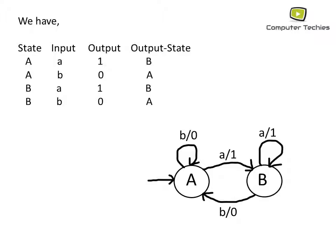Looking at this Mealy machine: we have two states A and B. If input a is applied we move to state B with output 1. If input b is applied we move to state A with output 0. In this way we have successfully converted the Moore machine into its equivalent Mealy machine.